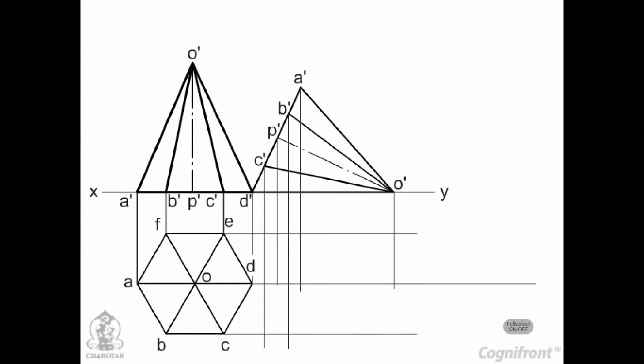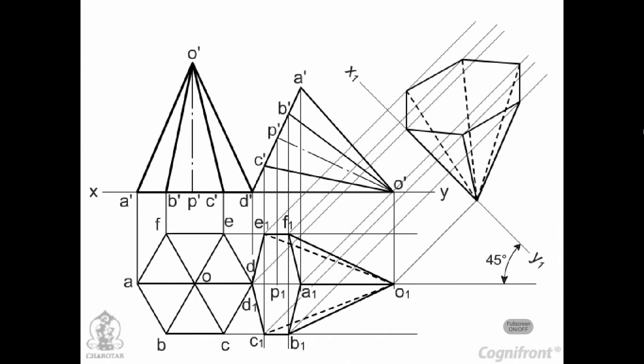Project the second top view. Draw a new reference line x1, y1 making 45 degrees angle with O1, D1, the top view of the axis, and project the final front view.